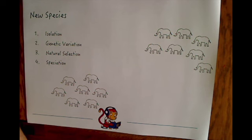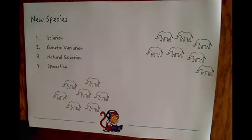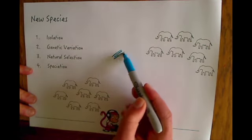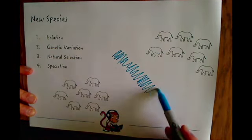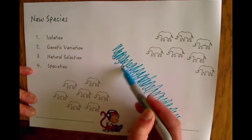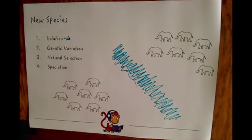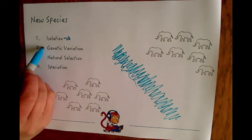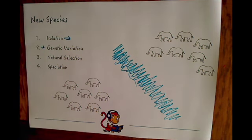We've covered isolation so far, which is the first step of generating a new species. Let's assume that a body of water has come between two groups of elephants — maybe due to tectonic plate movement — causing isolation. Don't forget that they don't just suddenly turn into two different species. The first important thing to realise is that already in this population there is genetic variation. These elephants aren't clones of each other; they will look slightly different.